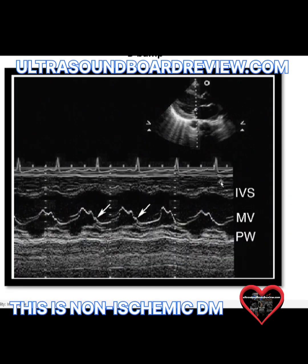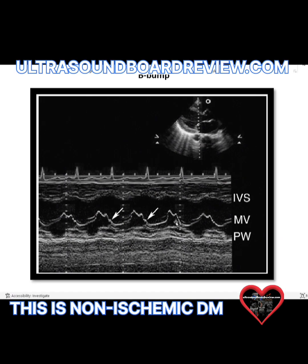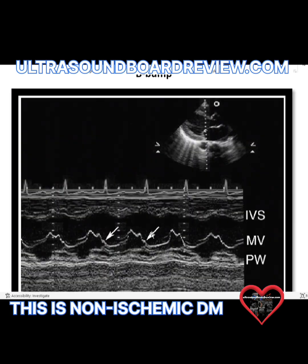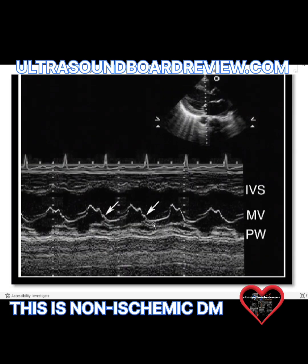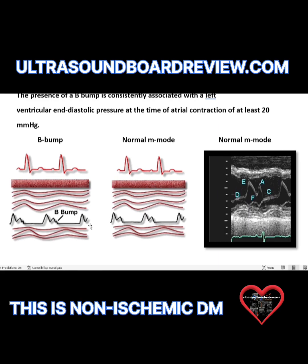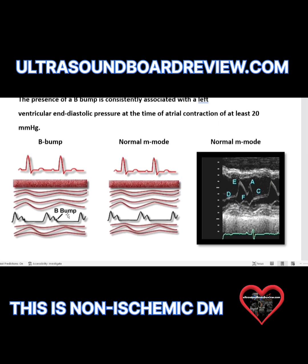This is a classic example of dilated cardiomyopathy. Here we have the cursor going through the mitral valve looking at the inflow — we have the mitral valve E and A waves — and then we have this little waveform right there. This is called a B-bump. A B-bump is indicative of an elevated left ventricular end diastolic pressure. You're going to have all this pressure exhibited up against the mitral valve at that timing, and it causes that little bump.